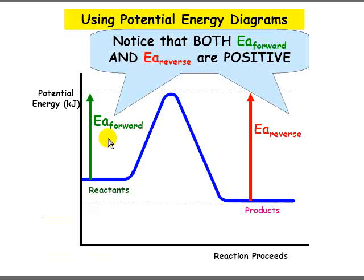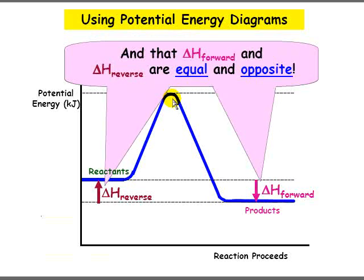Notice that the activation energy for both the forward and the reverse reaction are positive. Activation energies are always positive because you're going from a lower energy state to a higher energy state. Also notice that delta H forward and delta H reverse are equal in energy but opposite in sign. In this case, delta H forward is negative and delta H reverse is positive, but it's the same energy amount.